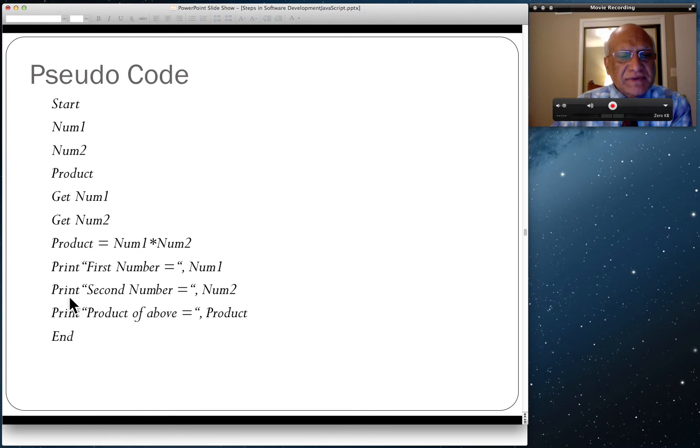We do exactly the same thing for the second number: print the text "second number equals" and the value stored in variable Num2. Finally, we do the same for the product—"product of above equals" the value stored in Product that was determined by this expression here. Then the end.